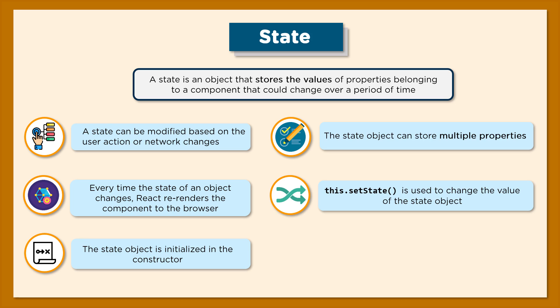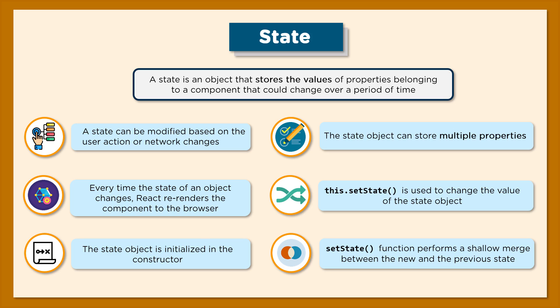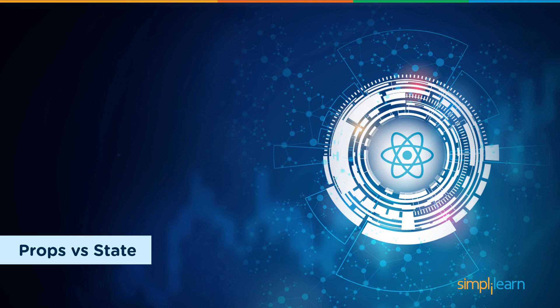A method called setState is used to update the value of the state object. This function performs a shallow merge on the new and the previous state. Conventionally, a shallow merge ensures that the previous state values are overwritten by the new state values.